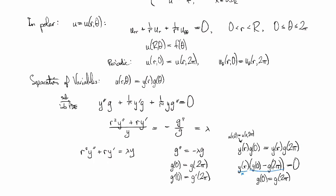We have two equations to solve: the periodic equation for g, and the equation for y. We also have our boundary condition: y(R)g(θ) equals F(θ), which we'll need to work in as well.